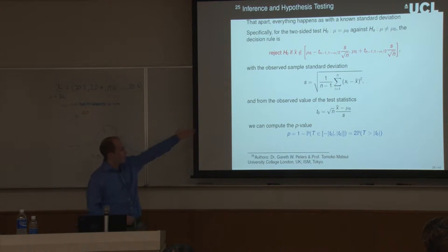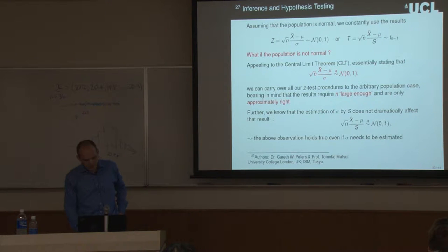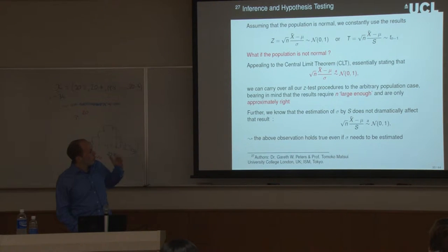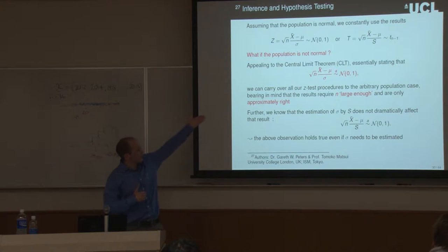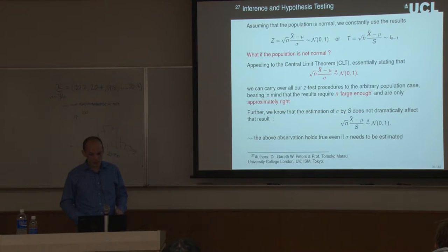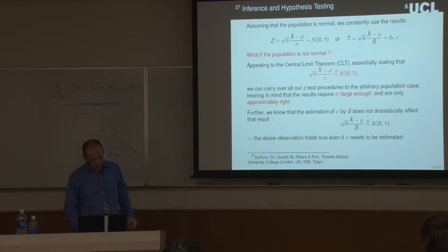This is our calculated T-zero with S on the denominator. What if the population isn't normally distributed? We can appeal to the central limit theorem: even if the population isn't normal, this statistic is still approximately normally distributed. The more data samples we collect, the closer to normal it will be. Similarly, plugging in S for the standard deviation introduces two approximations, making it less close to normal — but it doesn't dramatically affect our result.